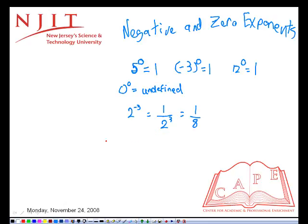Some further examples. Negative five to the power of negative two. This is the reciprocal of negative five to the power of two, which is one over negative five times negative five, which is equal to one over twenty-five.